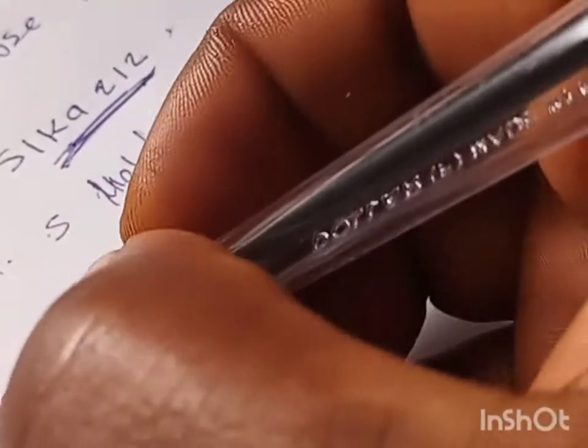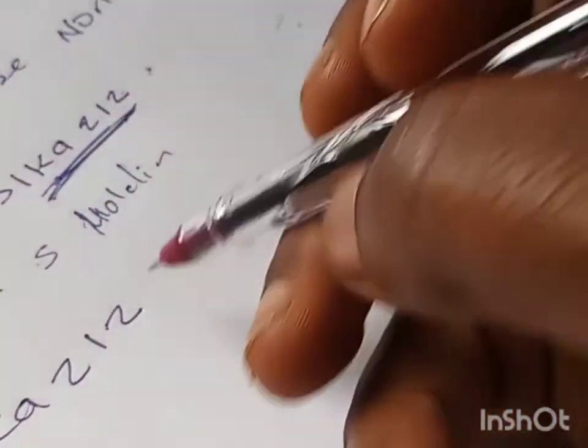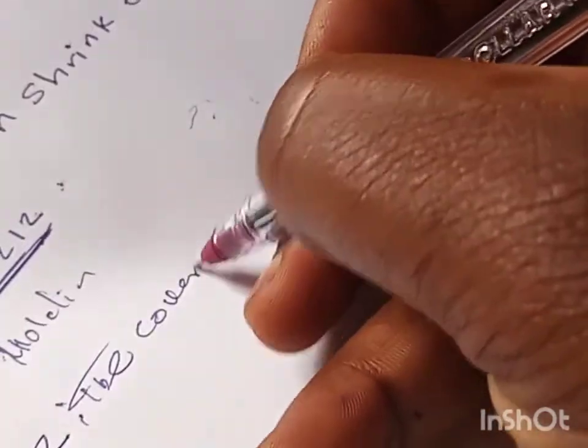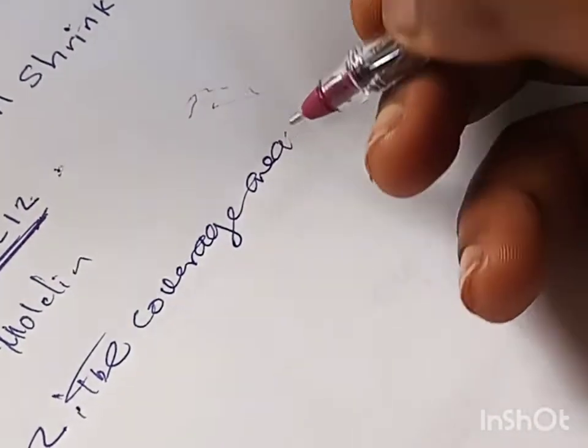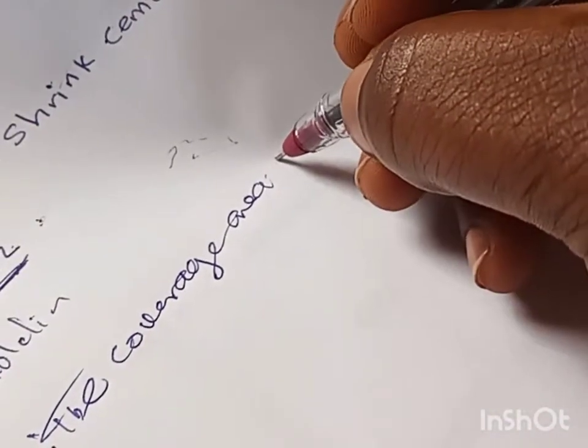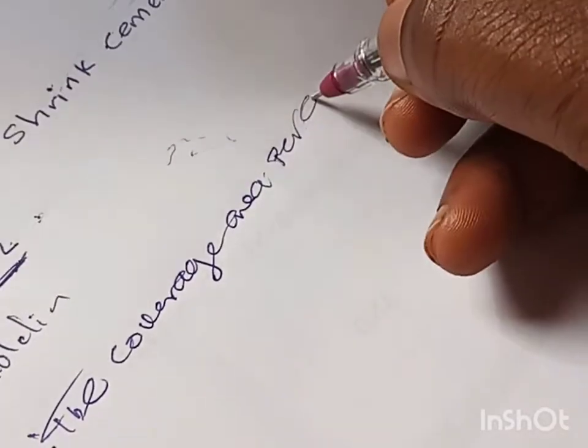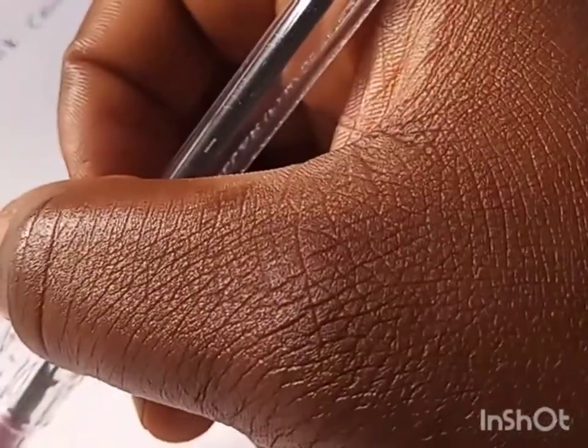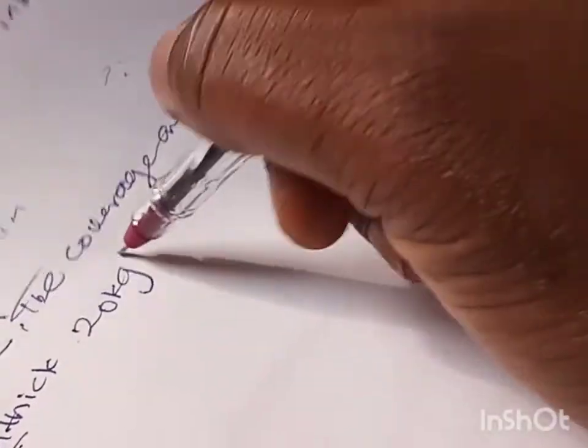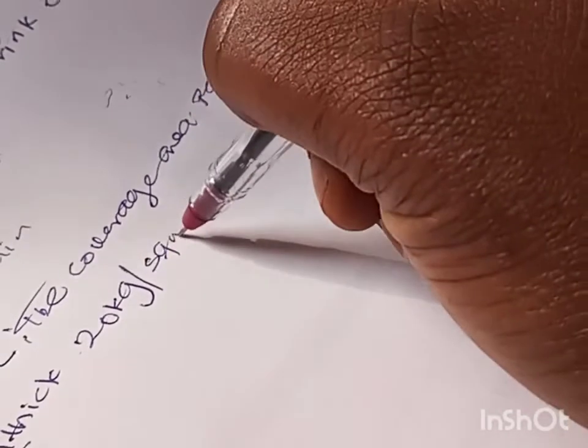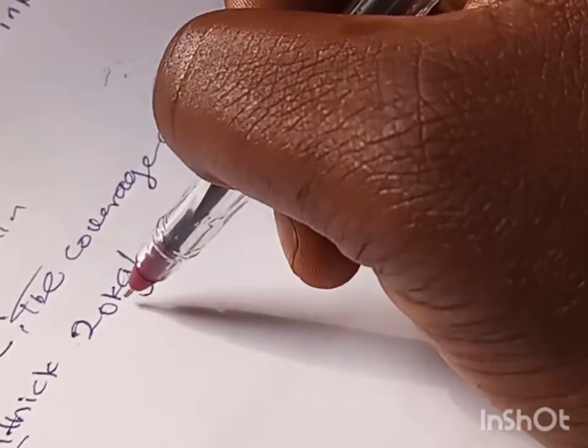For this particular Sika product, Sika 212, the coverage area per square meter - considering 10mm thick grouting, assuming the thickness of our grouting is 10mm - is 20 kg per square meter. Wondering how I got this kg? This is based on the technical data sheets of the product.